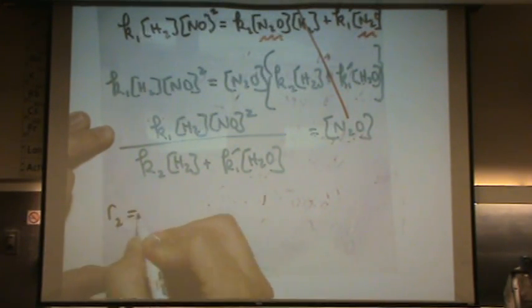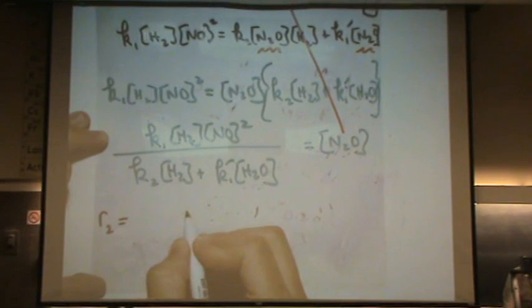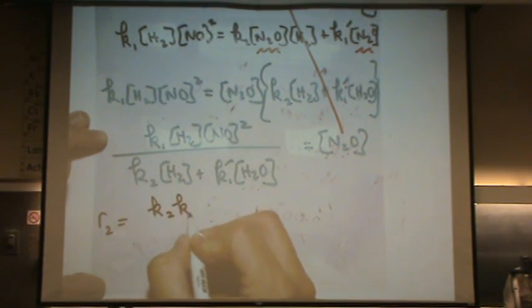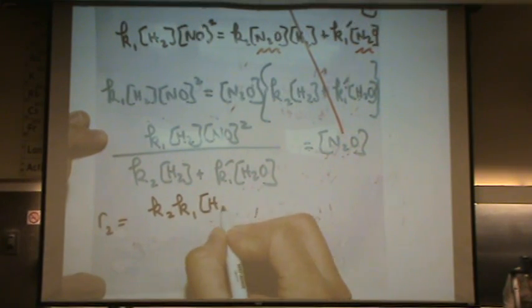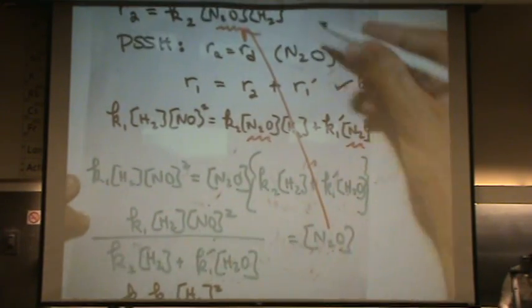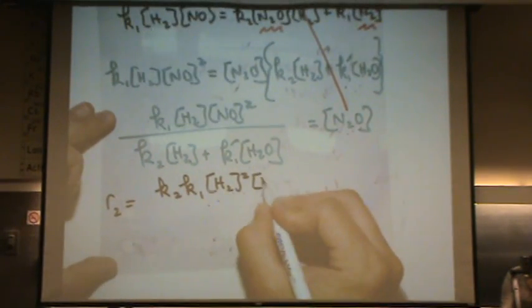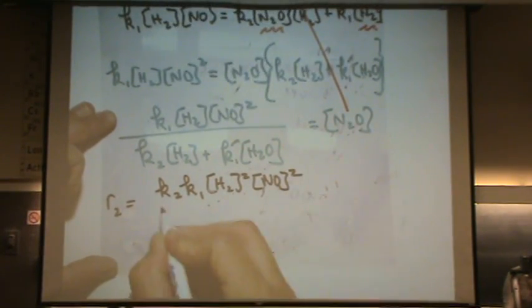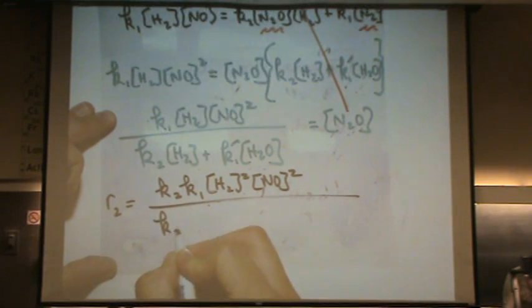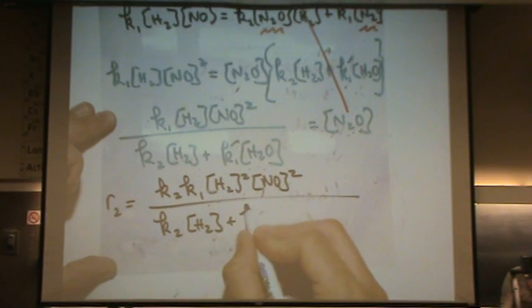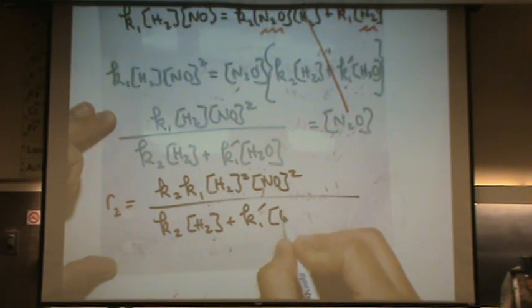Rate two, hopefully I'll fit this in one line, is now going to be K2 times K1 H2 squared, because now there's two, one from here originally and one here, times NO squared all over K2 H2 plus K1 prime times H2O.